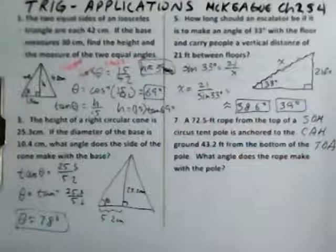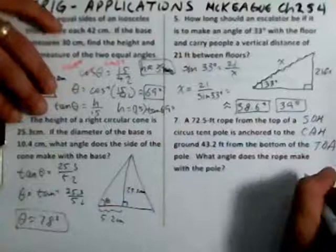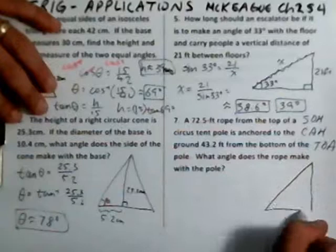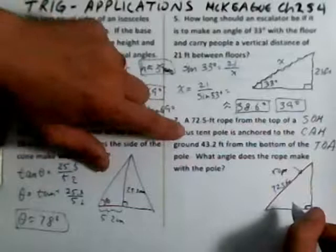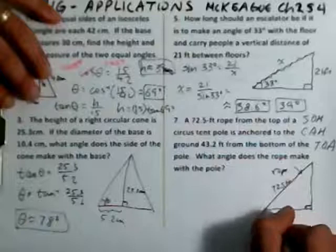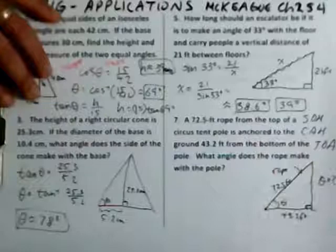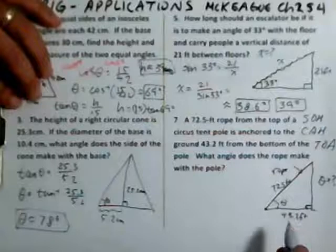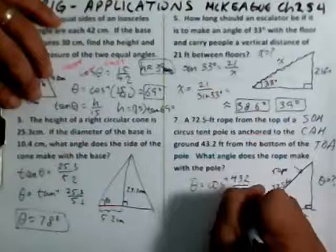A 72.5-foot rope from the top of a circus tent pole is anchored to the ground. The anchor point is 43.2 feet from the bottom of the pole. What angle does the rope make with the pole? We assume the pole is vertical. We have the adjacent side (43.2 feet) and the hypotenuse (72.5 feet), so we use cosine. Theta equals the cosine inverse of 43.2 divided by 72.5. Use your calculator to find the answer.